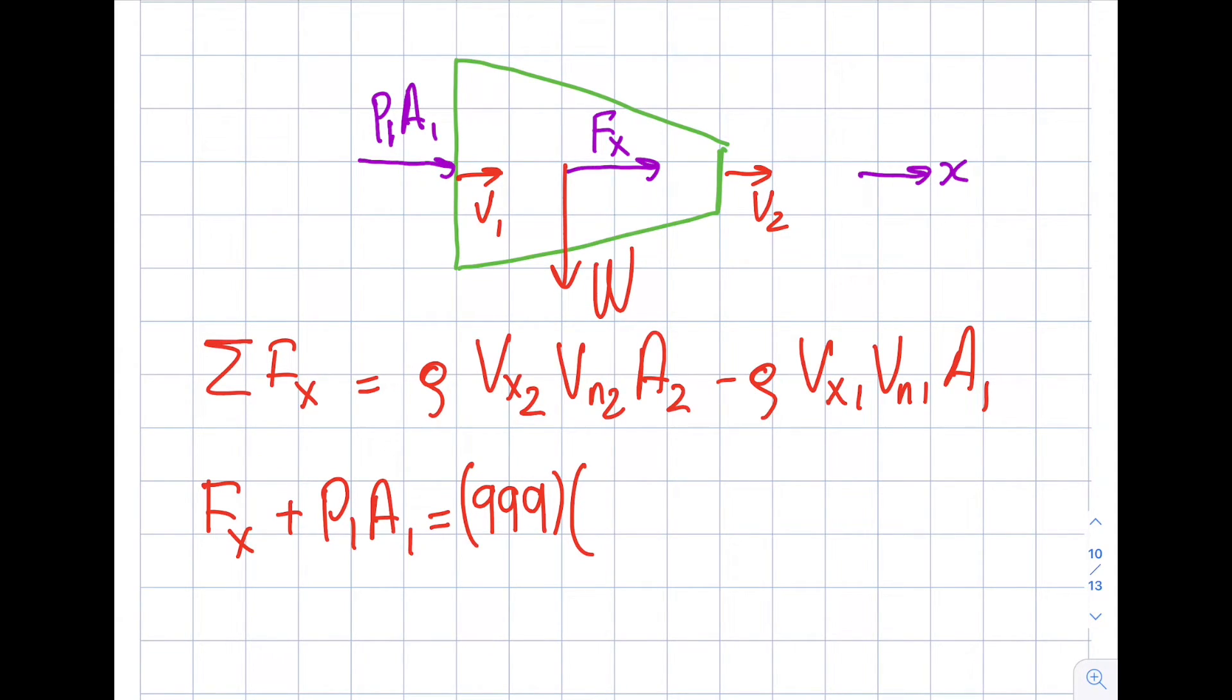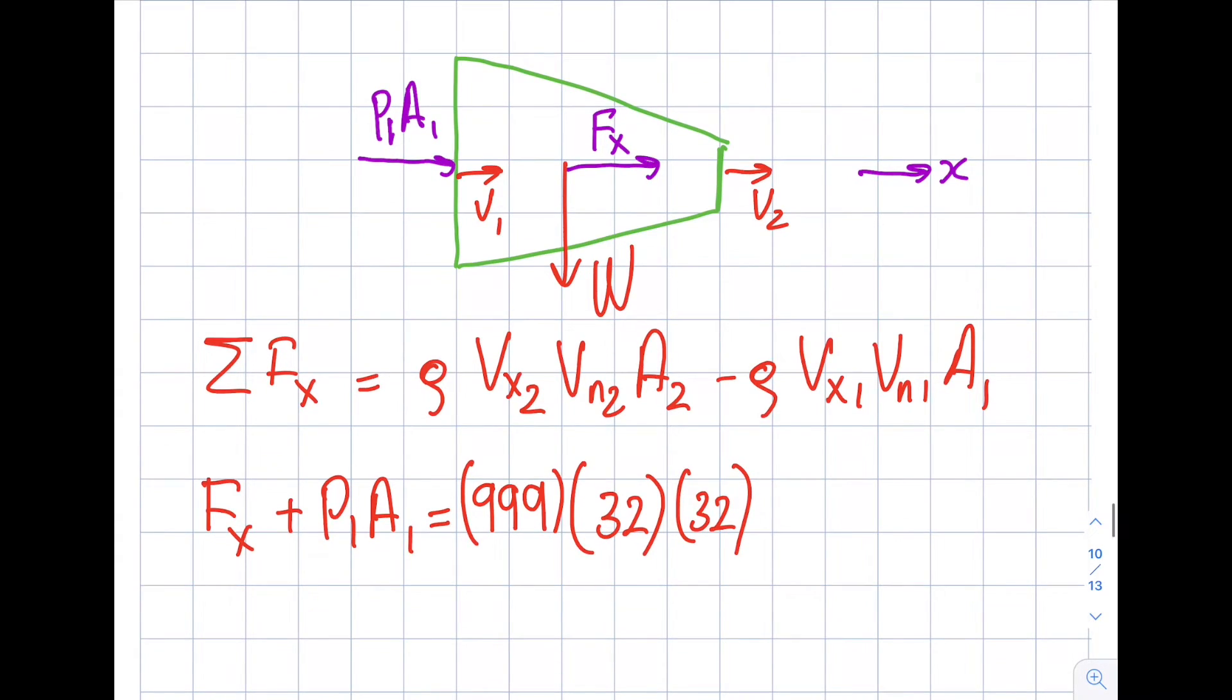That's what I found from the conservation of mass. The way that I pick my control volume, I always align my control volume with the exit area. So I'm going to always have the velocity is equal to itself over here. A2 is pi over 4. What was the second one? One centimeter. So 10 to the minus 4, 10 to the minus 2 square.